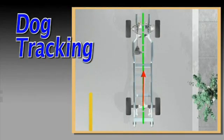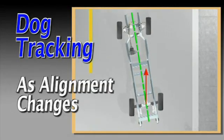As a rule, dog tracking occurs gradually as the alignment condition of the vehicle slowly shifts over time.